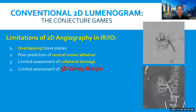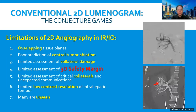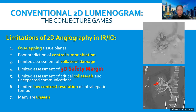Conventionally, 2D angiography offers us 2D venograms, and in most cases it is a conjecture gain. Because of the limitations of 2D angiography, we are overlapping tissue planes for predictions of central tumor ablation. We need the assessment of collateral damage, 3D safety margins, critical collateral, unexpected complications, and low contrast resolution. Not to say many are unseen.